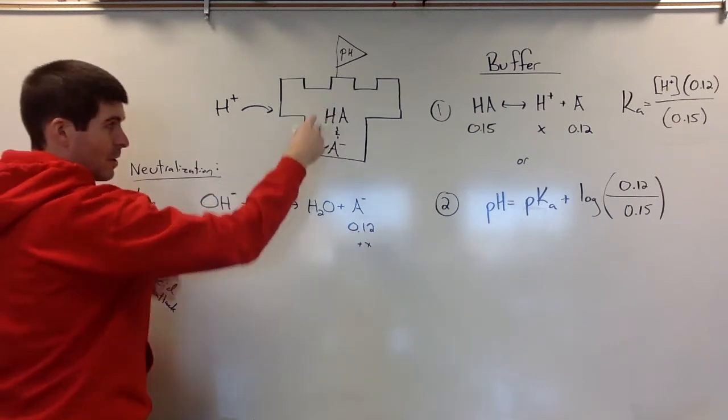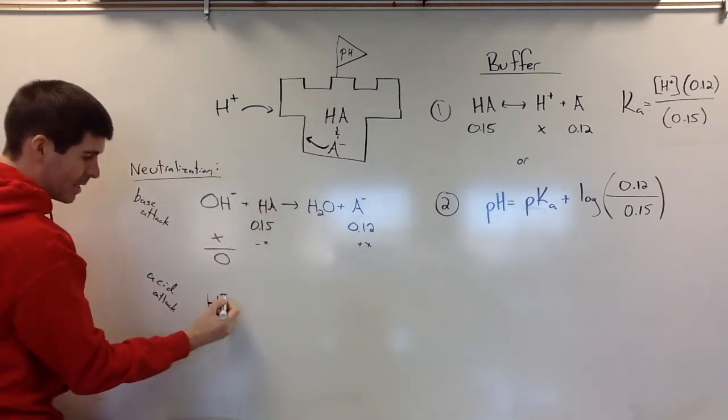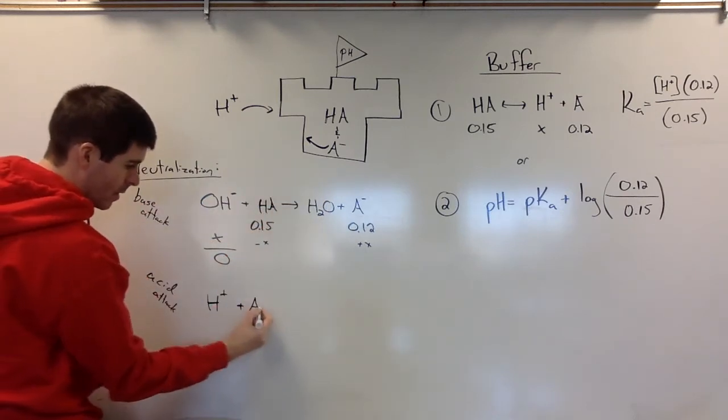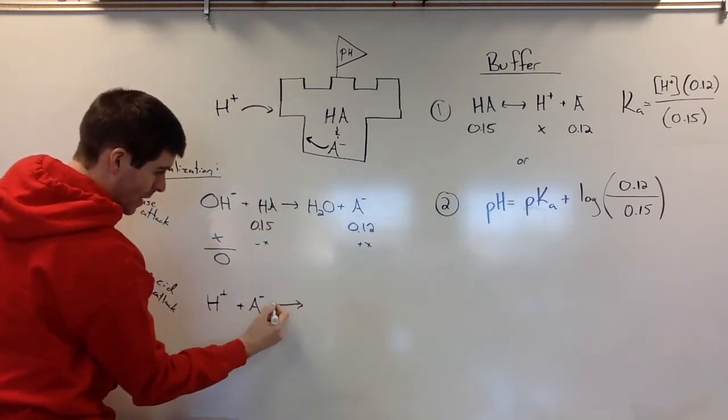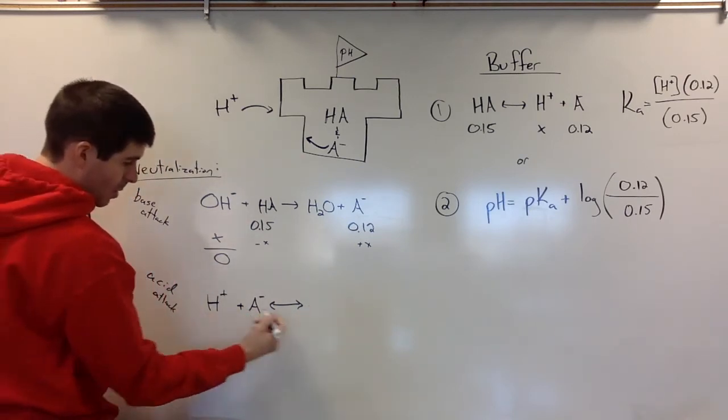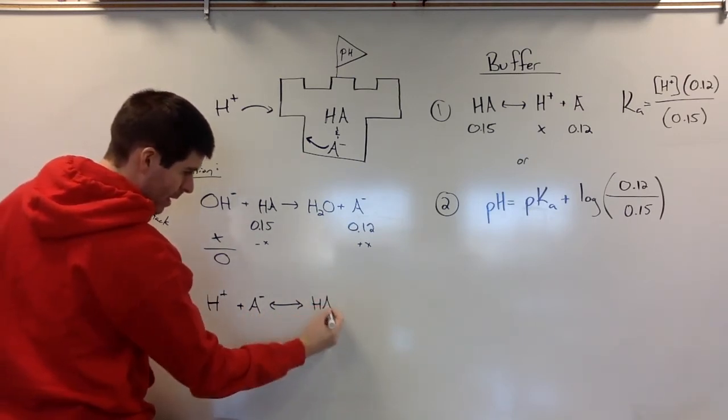And the buffer can defend against either one. So if an acid gets added to the system, the conjugate base will be deployed to neutralize it. And those are going to combine together to make the conjugate HA.